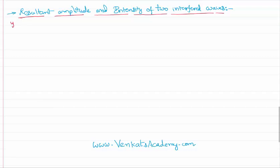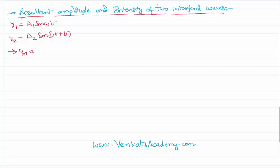Let us consider the first wave: the particles oscillating are having a displacement y1 equal to a1 sine omega t. The second wave: y2 equal to a2 sine (omega t plus phi), assuming that these two waves are having a phase difference of phi. When these two waves are combined, y resultant will be y1 plus y2, which gives a1 sine omega t plus a2 sine (omega t plus phi).